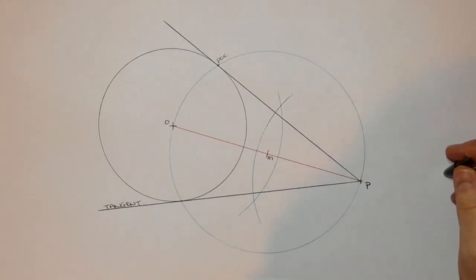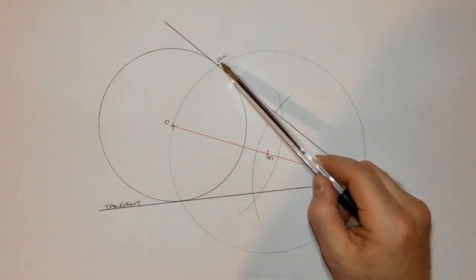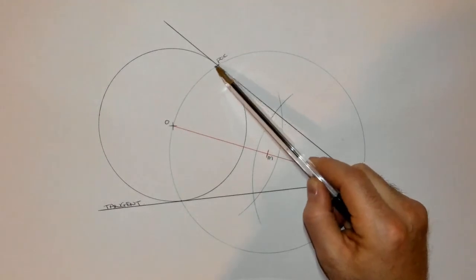Now for neatness purposes, when you're actually doing this drawing and applying it to a question, you might only actually make the little mark here where it intersects it.